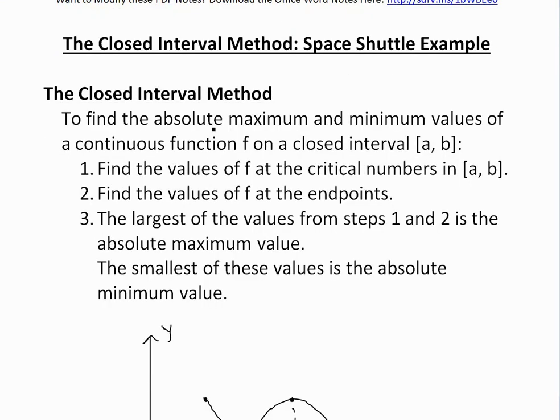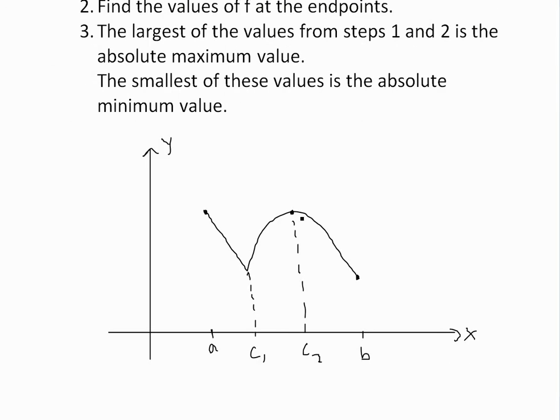Basically, to find absolute maximum and minimum values of a continuous function on the closed interval [a, b]—closed interval just means the function exists at a and b at the endpoints—step one is find the values of f at the critical numbers in [a, b]. You find the critical numbers, which are wherever the derivative is either zero or does not exist.